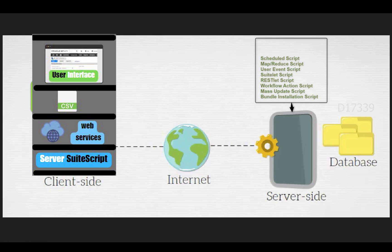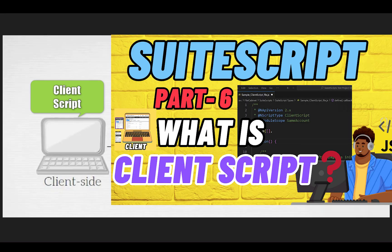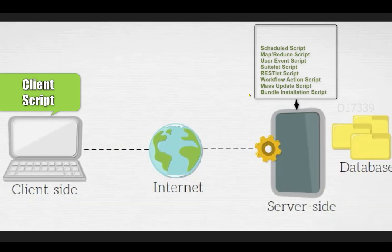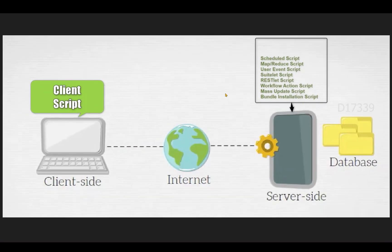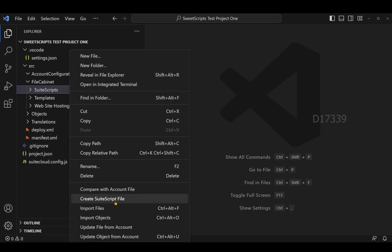For some records, at that point this user event gets triggered. Previously we have seen client scripts which have multiple entry points starting from page init. In the same way, user event scripts also have some default entry points provided by NetSuite. Now let's check what are the three different entry points available in user event scripts.